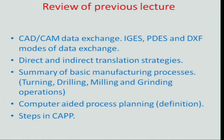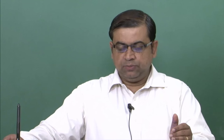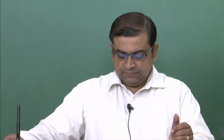We also talked about direct and indirect strategies and how many processors are needed. We had a summary of the various manufacturing processes like turning, drilling, milling, and grinding — different operations whose knowledge is necessary when you are trying to do CAPP, or computer-aided process planning.